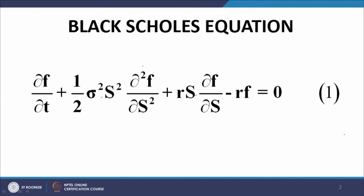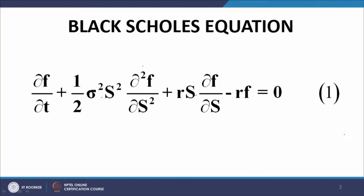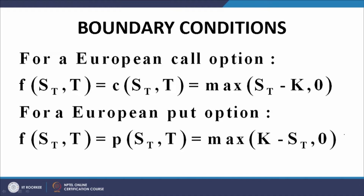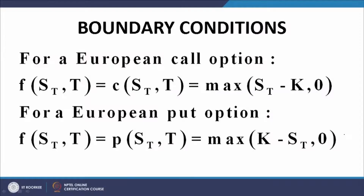Now if we solve this equation, there are a number of ways of solving it. We can use the Green's function approach, we can use separation of variables, we can convert it by coordinate transformation to the heat equation and then solve it, or we can use Fourier transforms as well. When we solve this equation using the boundary conditions on this slide, these boundary conditions represent the fact that on the date of maturity of the option — note we are talking about European options — the value of the option must equal its payoff. That is what is represented by equation 1 for a European call and equation 2 for a European put.